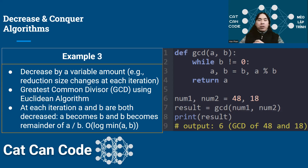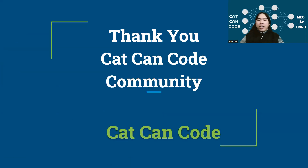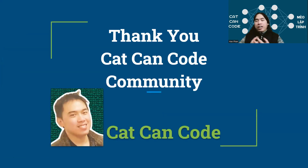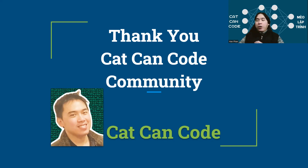That's all three examples demonstrating all three different strategies in decrease and conquer algorithms. Thank you very much for watching. Make sure to like and subscribe to make it easy for you to see the next video. Thank you for watching and for being part of the TAT10 code community. See you in the next video. Goodbye.